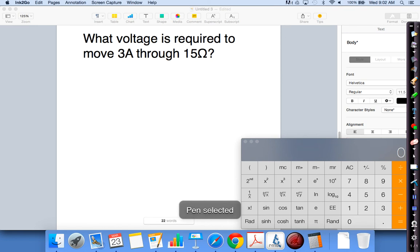Alright, so for this one, they want to know the voltage, what battery voltage is required to move 3 amps through 15 ohms. Alright, so my triangle, they want to know voltage. We only have one equation that has voltage. Voltage goes on top. Current and resistance goes on the bottom.